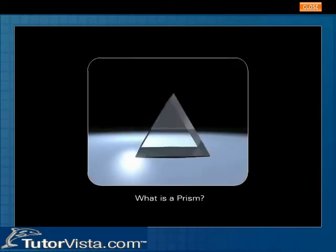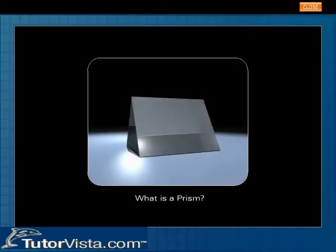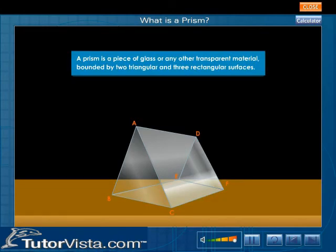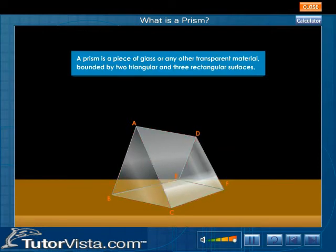What is a prism? A prism is a piece of glass or any other transparent material bounded by two triangular and three rectangular surfaces.